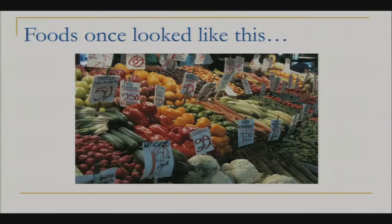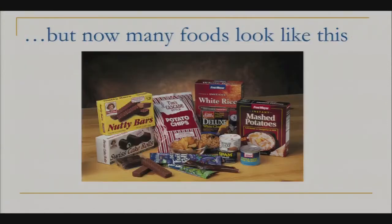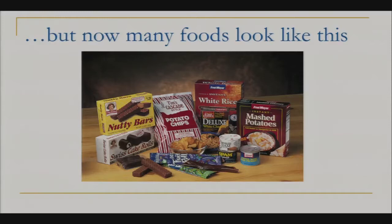One of the biggest challenges we're up against is that foods once looked very different. We had an abundance of fresh fruits and vegetables paired with lean proteins, beans, and whole grains. Now our foods look packaged, processed, and prepared — with a lot of added sugar and added fats. It makes sense why we might not eat a lot but still continue to gain weight. These don't provide us with a lot of volume — they're what we call weight-promoting foods, and it doesn't take a lot of them to really add up.